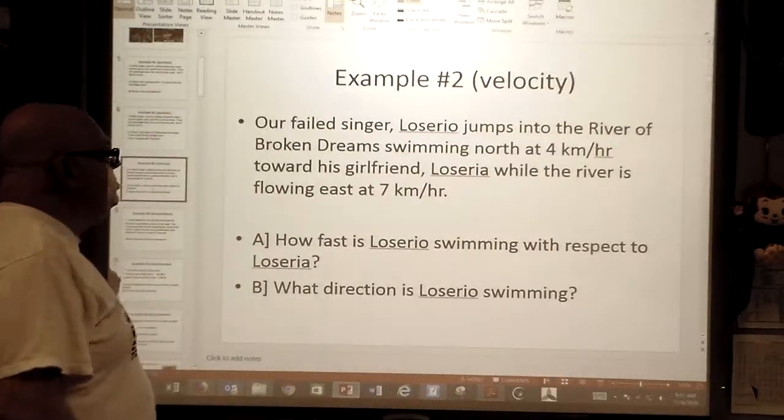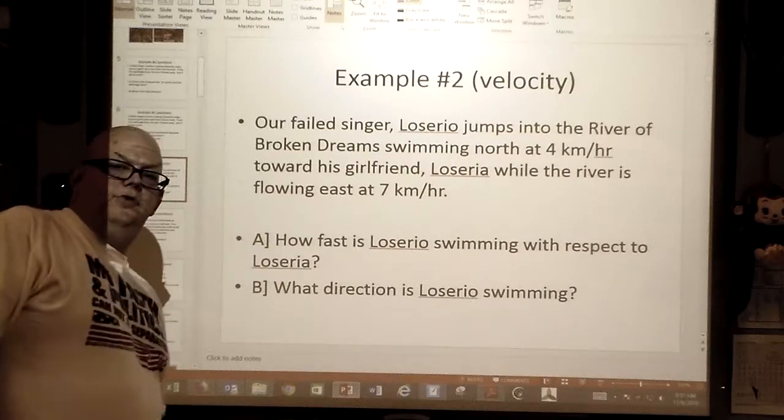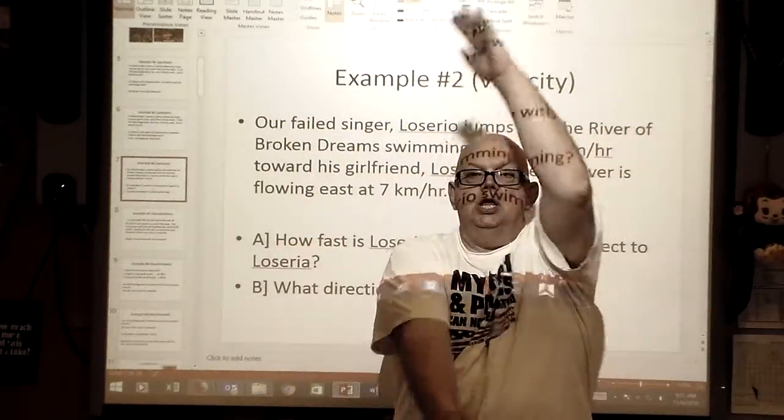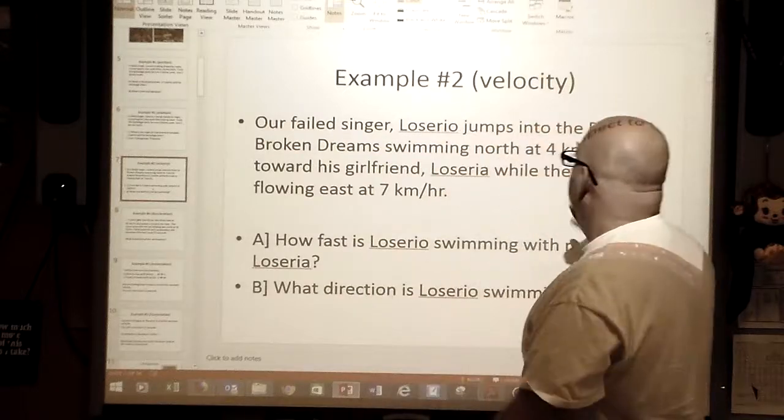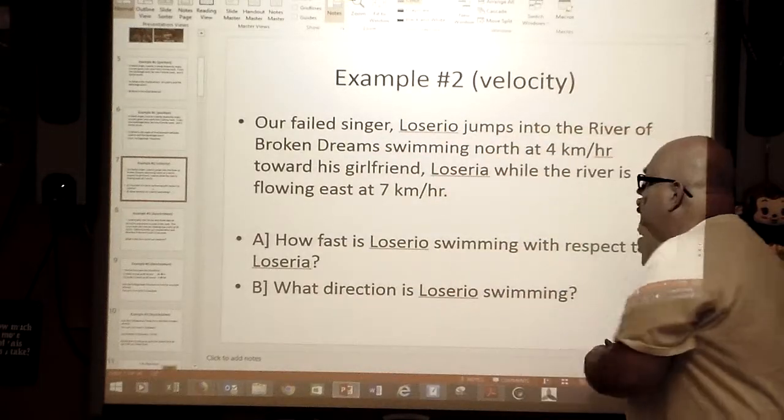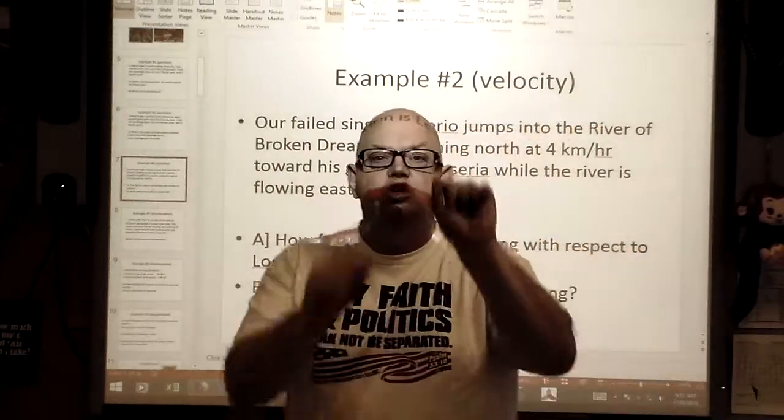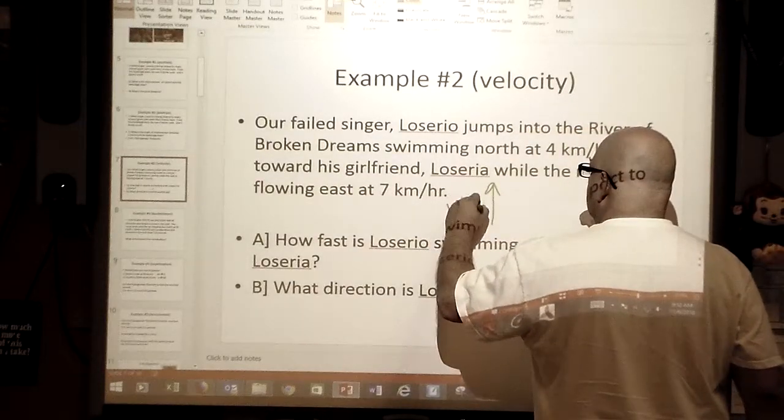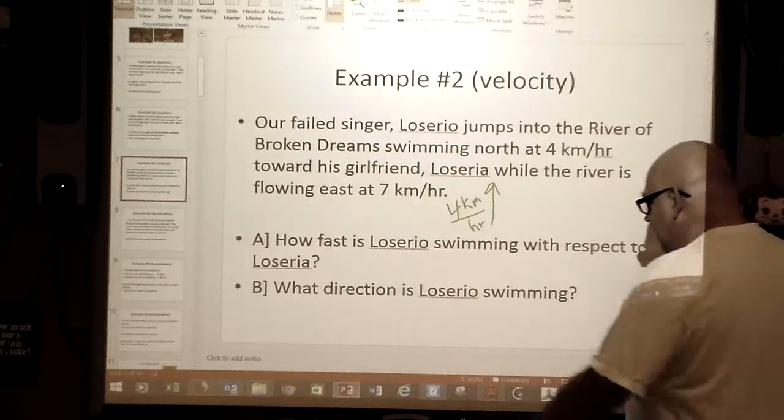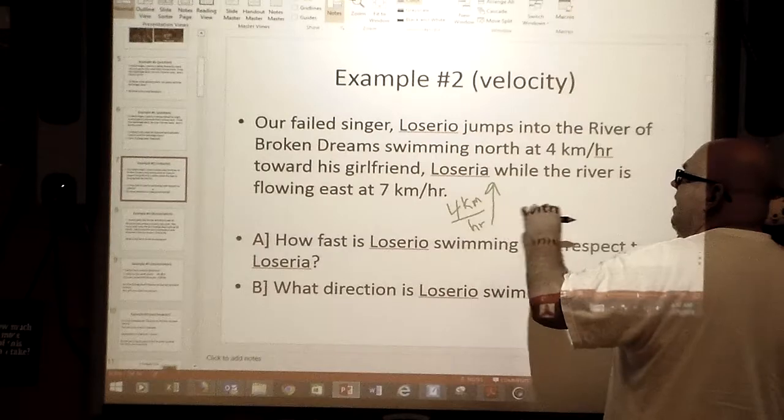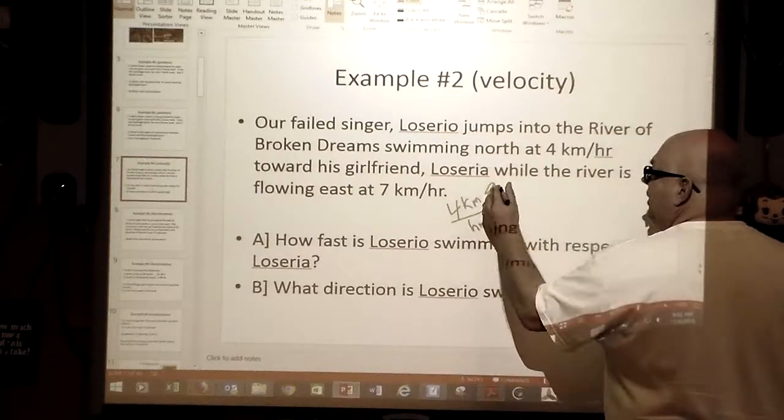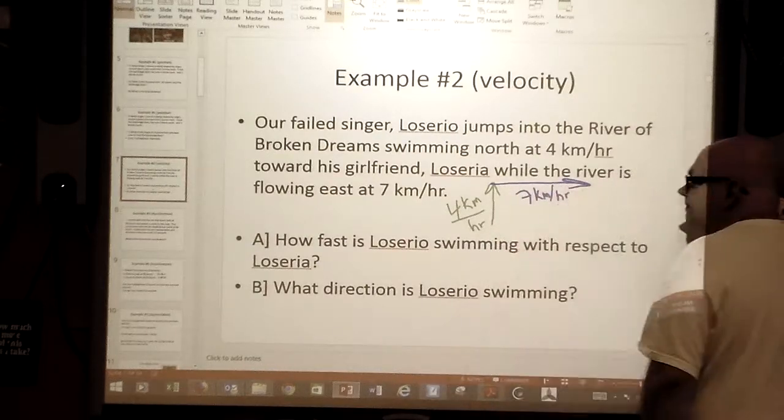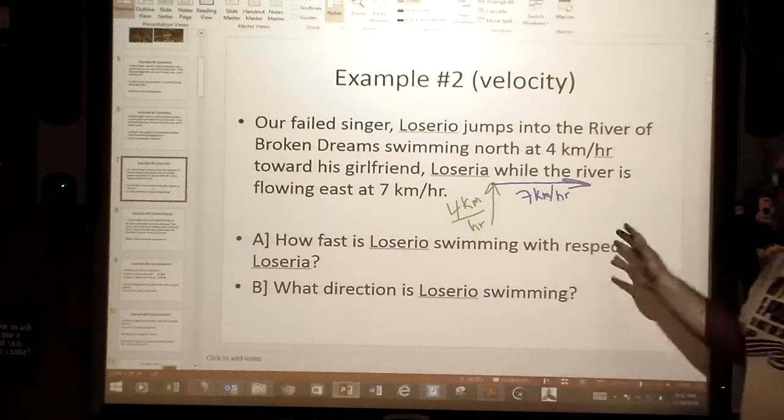Here's another one where we look at a river. We're looking at velocity. It's still the same concept: you have your x motion and your y motion. Our failed singer jumps into the river of broken dreams, swimming north at 4 kilometers per hour. That's your first vector that you want to write in. The river is flowing to the east. If this is north, then east has to go this way at 7 kilometers per hour.